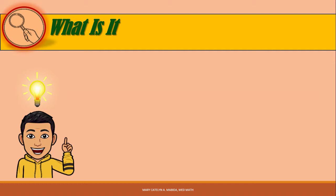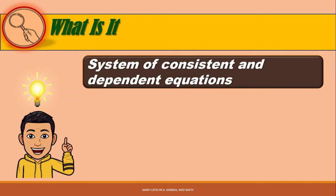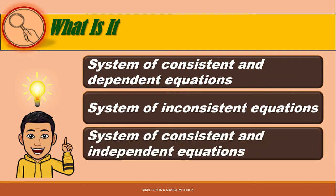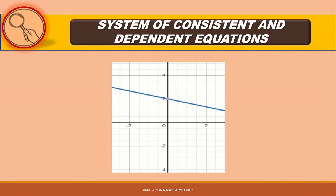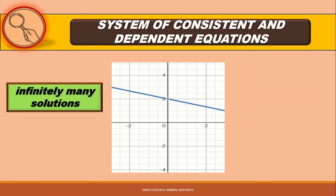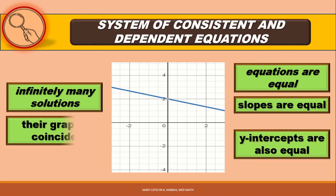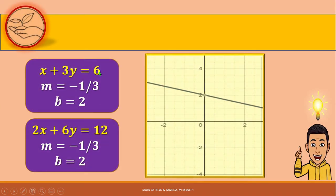There are three kinds of systems of linear equations in two variables according to their number of solutions: system of consistent and dependent equations, system of inconsistent equations, and system of consistent and independent equations. A system that is consistent and dependent has infinitely many solutions. These equations are equal, and therefore their slopes and y-intercepts are also equal, and their graphs are coinciding. For example, the system x plus 3y equals 6 and 2x plus 6y equals 12 is consistent and dependent.